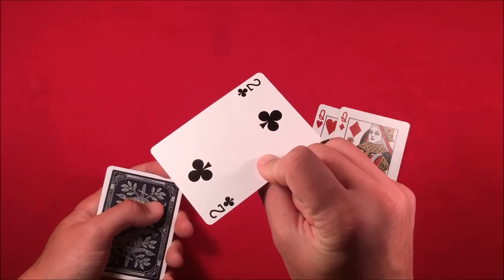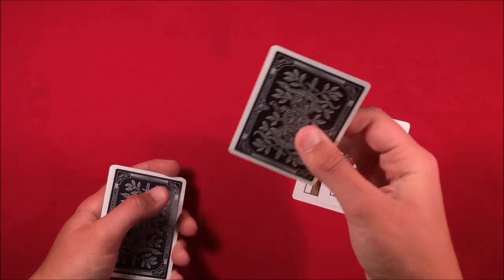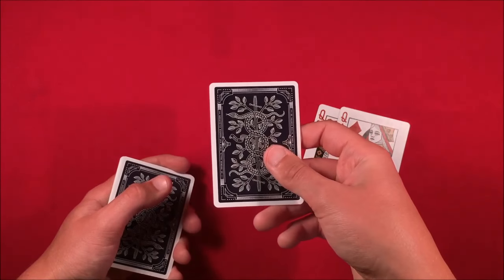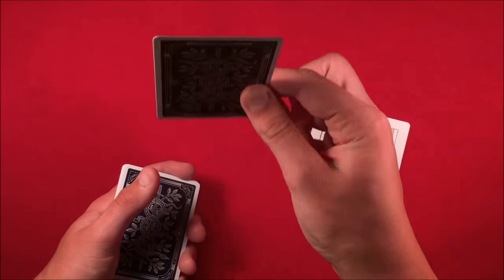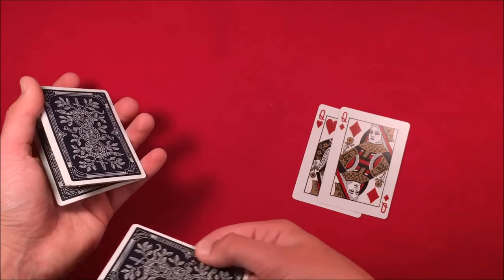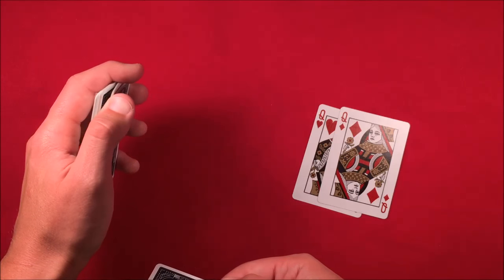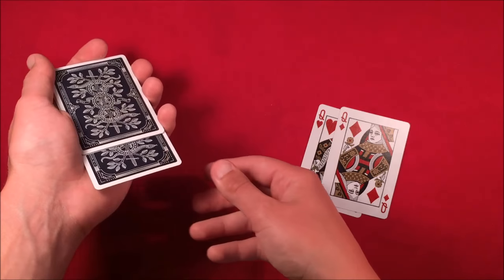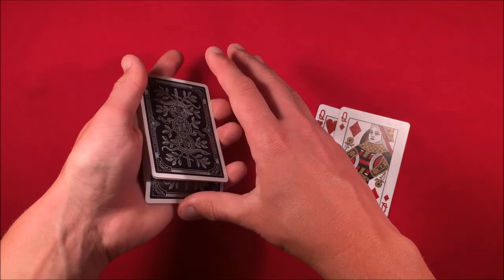Let's say they get the two of clubs. It doesn't matter if you see it or they see it, but it usually works better if just the spectator looks at it. Tell them you're going to take their card. Open up the packet, stick the card in, and push down.